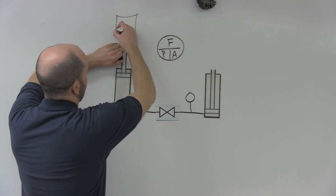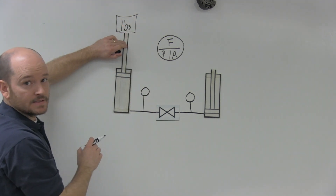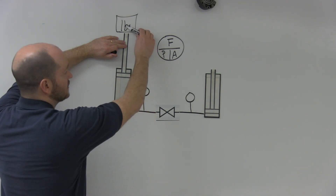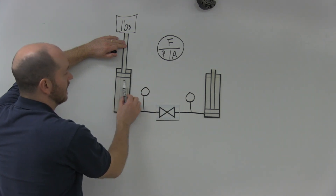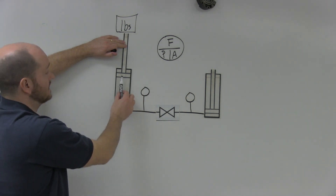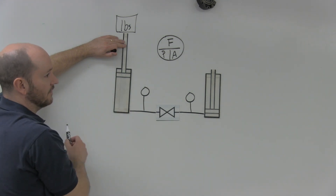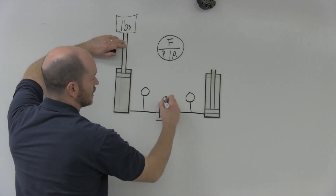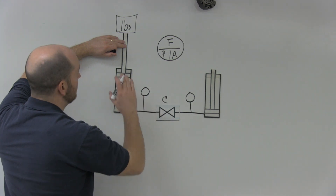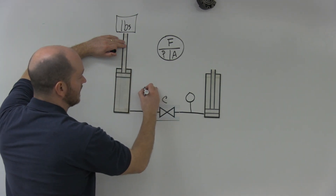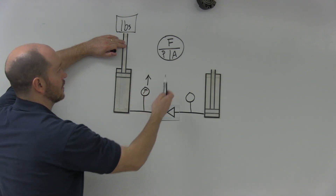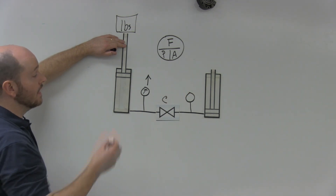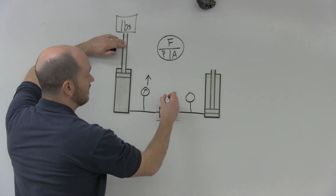With the valve closed, if I put a force on here — some weight — that's going to create pressure. That pressure is going to be based on how much force is being applied and the area through which it's being applied: the bore of the piston, or the square inches of the cylinder. If this valve is closed, there's no flow, this cylinder stays put, and all that happens is pressure goes up.